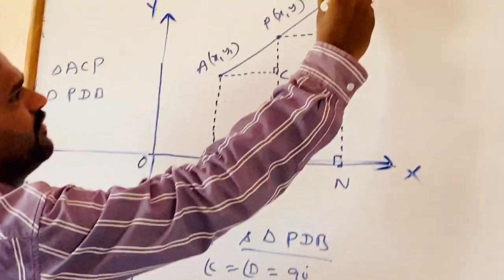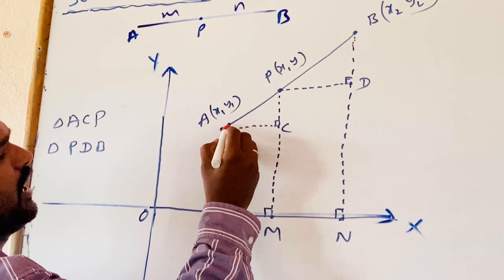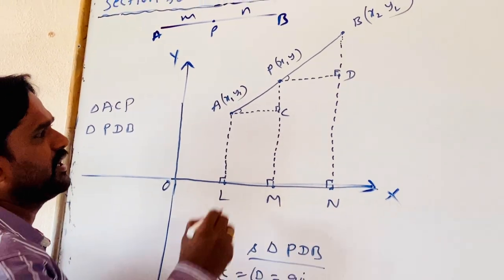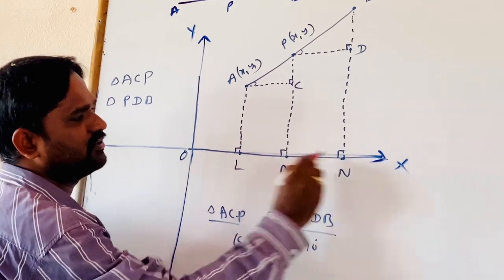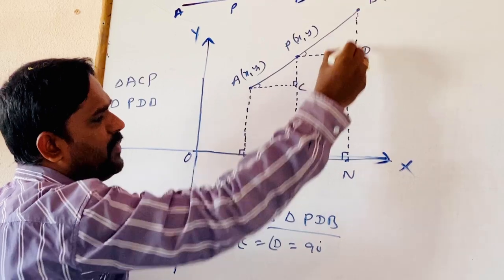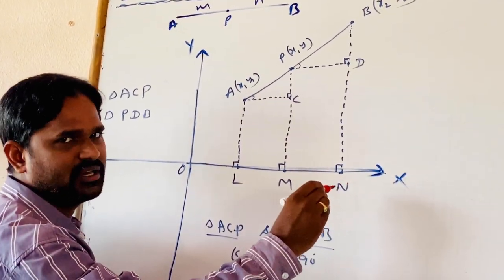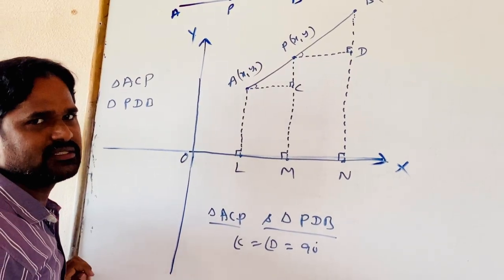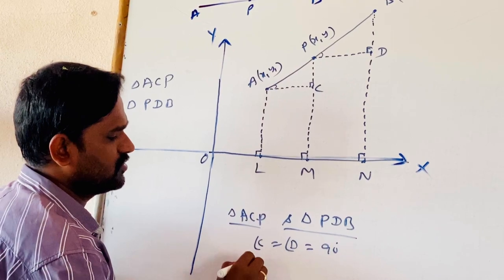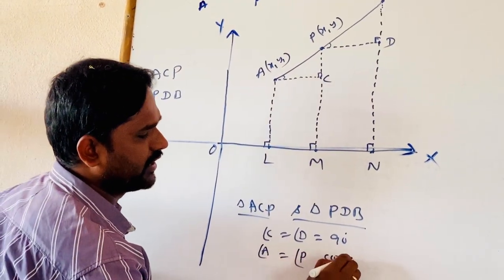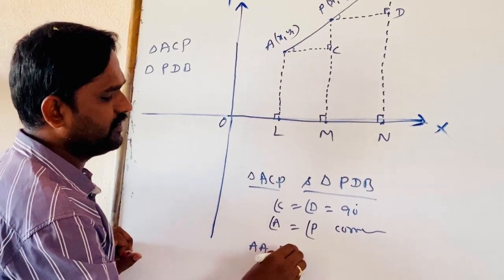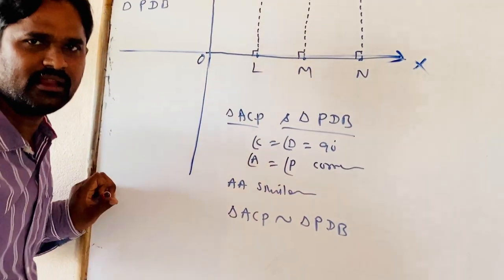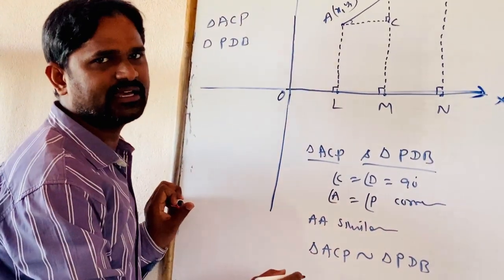Observe that AB is a line. Angles A and B are equal based on corresponding angles, since the two perpendiculars AL, PM, and BN are parallel — all perpendicular to the X axis. Using the transversal property, corresponding angles are equal. So by the AA similarity condition, triangle ACP is similar to triangle PDB. If two triangles are similar, their corresponding sides are in proportion.